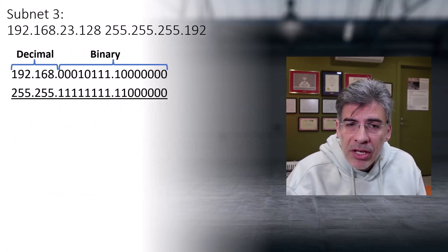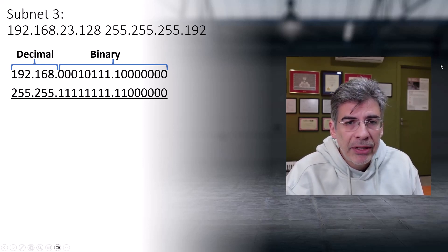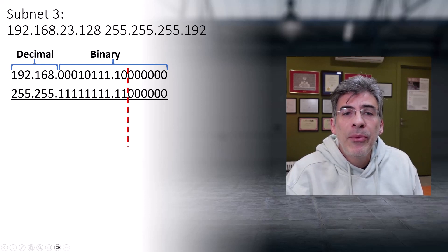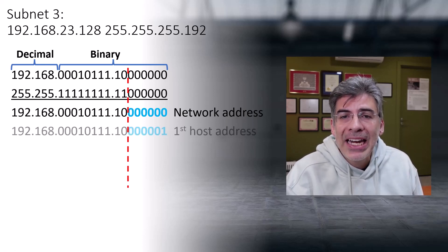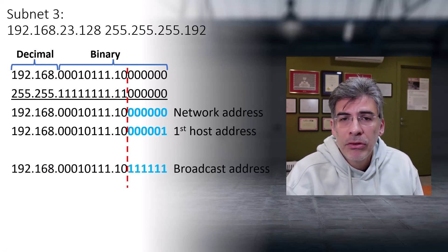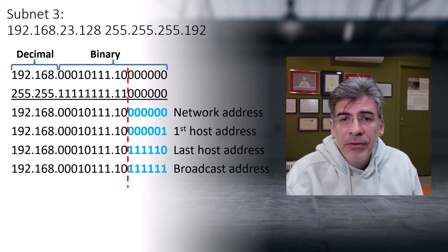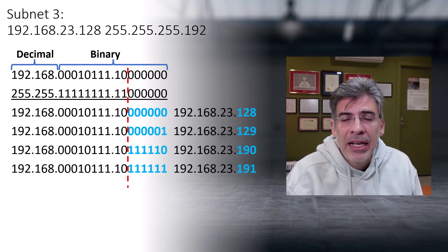We go through the same process: using our network address and subnet mask with the last two octets in binary, we draw the line separating host from network portions. We get the network address by setting all six host bits to zero, the first host address by adding one, the broadcast address by setting all host bits to one, and the last host address by subtracting one from the broadcast. We now have all the vital information to assign IP addresses to this subnet.